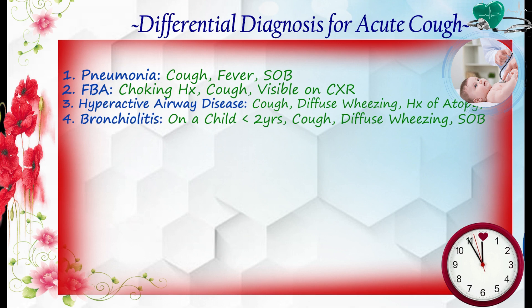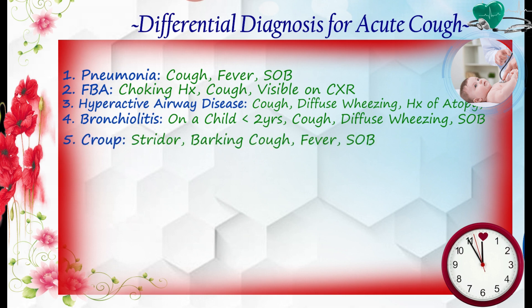We don't expect bronchiolitis after 2 years of age. Usually these children will have diffuse wheeze and sometimes may have toxic features. Croup is also another common presentation of acute cough, but the typical presentation is stridor, and other additional features should be assessed.